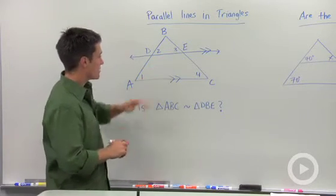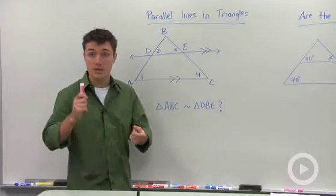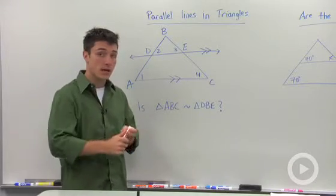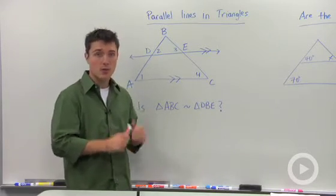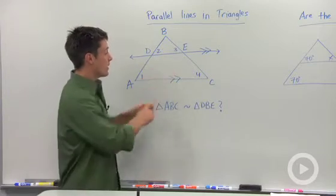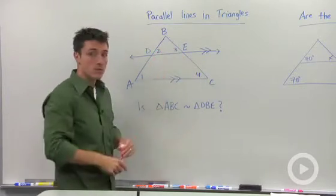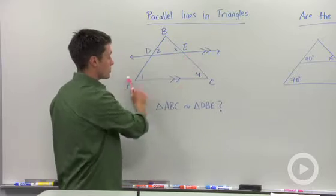Well, to do this, we're going to have to say one of our shortcuts, angle-angle, side-angle-side, or side-side-side, will have to apply in order for us to say that this smaller triangle, DBE, is similar to the larger triangle, ABC.